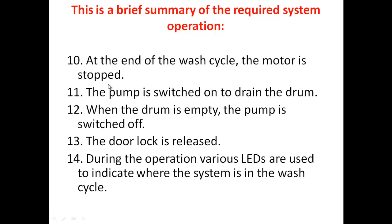Once that part of the program is over, you will stop the motor. Then the pump switches on to drain the water inside your drum. When the drum is empty, the pump is switched off and the door lock is released. During this operation, various LEDs are used to indicate whether the system is in the wash cycle. From the outside, we cannot see whether the temperature has reached. So how we started: you press a dial, then start, and thereafter everything happens inside which we cannot see. For the consumer, the washing machine indicates what state it is in using the LEDs provided outside.